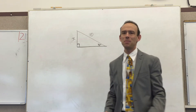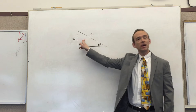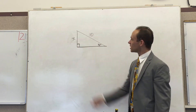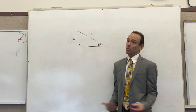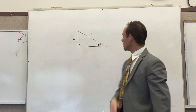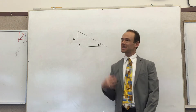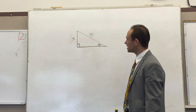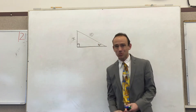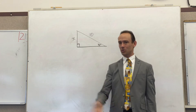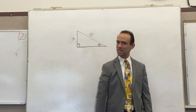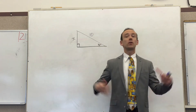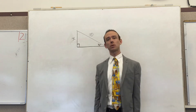We've got a right triangle here. We know the hypotenuse, we don't know that side, and we want that side. Now we would like to use the Pythagorean theorem because it's fun, but unfortunately for that to work we need two sides and we only have one side.